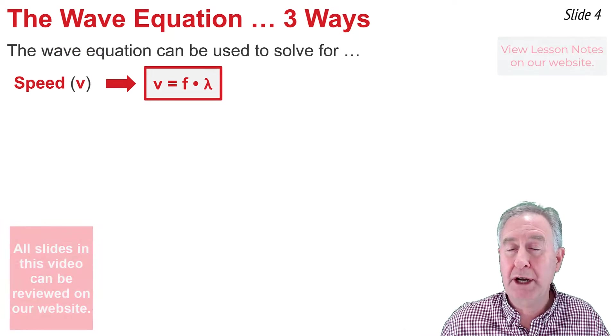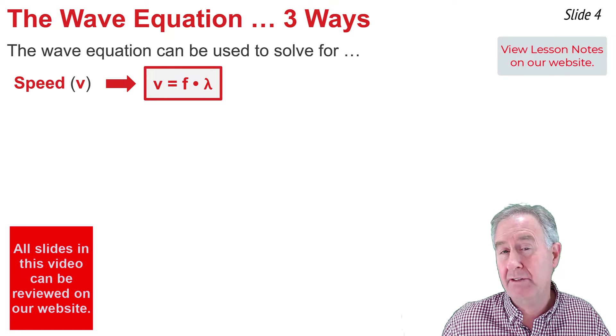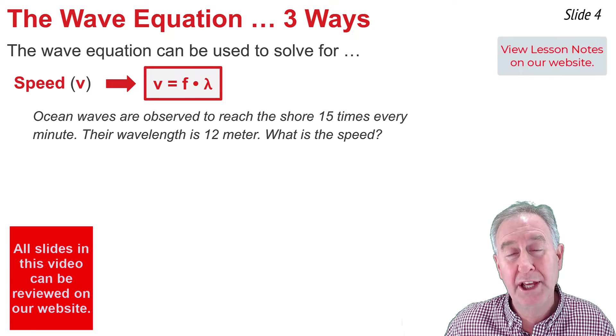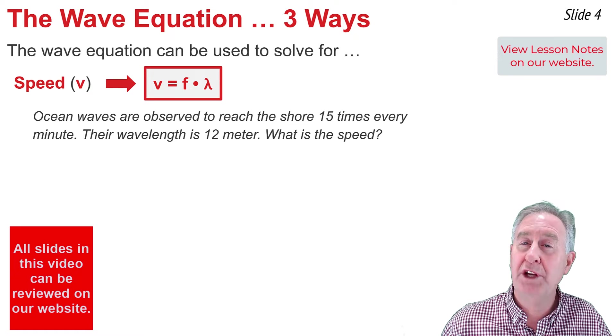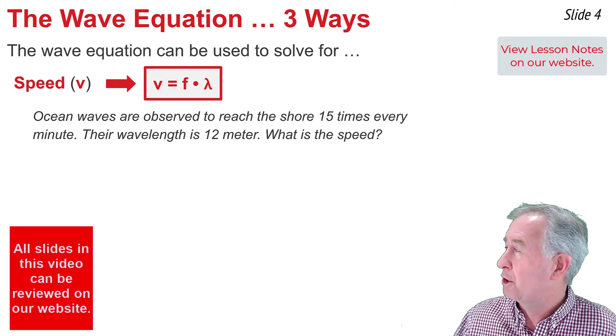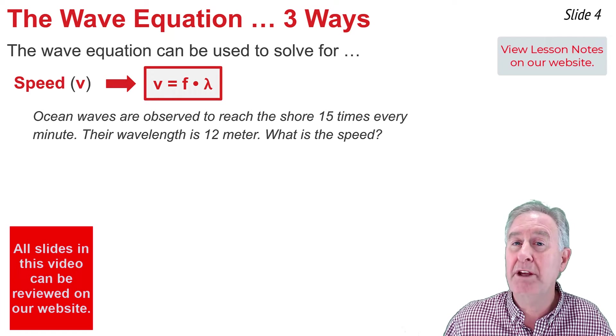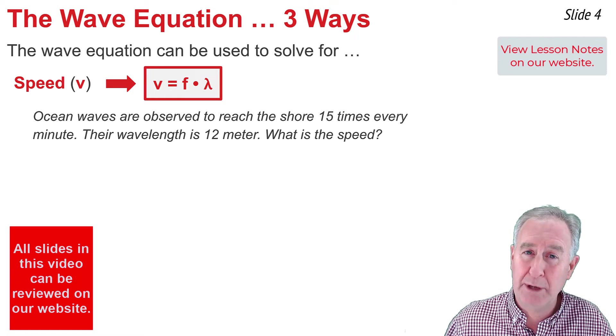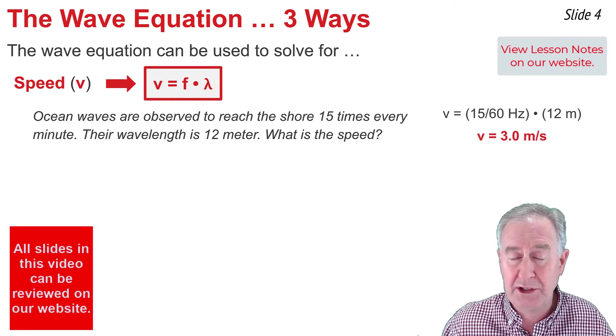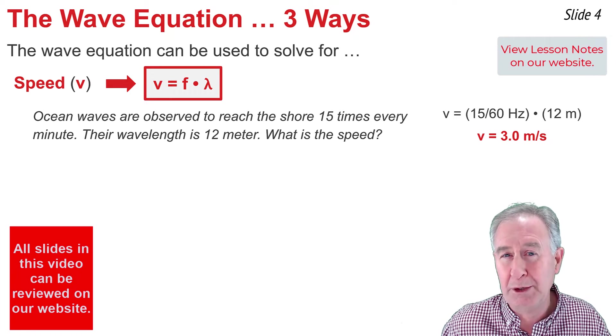Physics formulas can become algebraic recipes for solving for unknown quantities in physics word problems. V equal F lambda can be used to solve for speed and solve problems such as this one, in which ocean waves are reported to have reached the shore 15 times every minute. They have a wavelength of 12 meters, and we want to know what is the speed. So to do so, I multiply F times lambda. The F comes from the information 15 times every minute. That's equivalent to 15 divided by 60 seconds, or 15 divided by 60 hertz. It's multiplied by the 12 meter wavelength gives you the value of 3.0 meters per second.